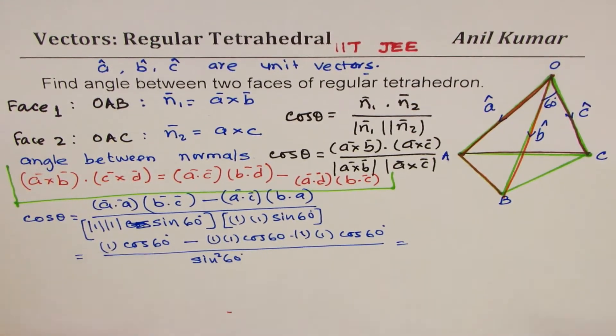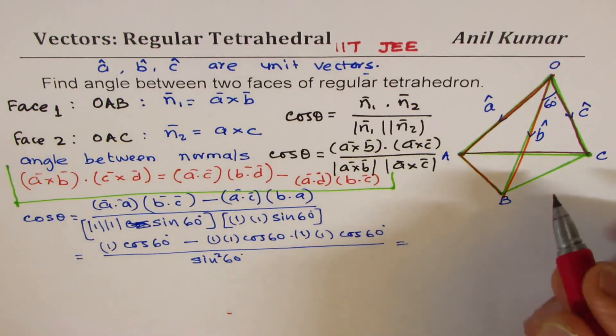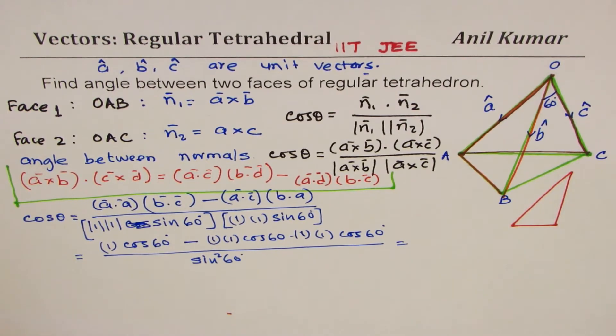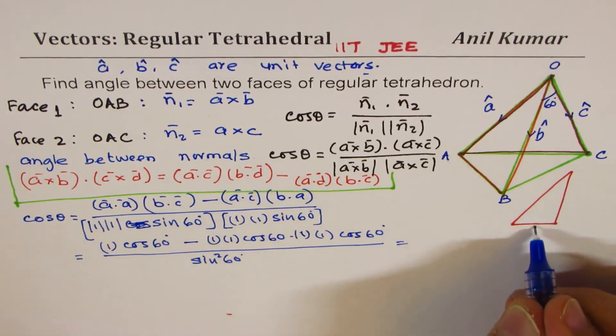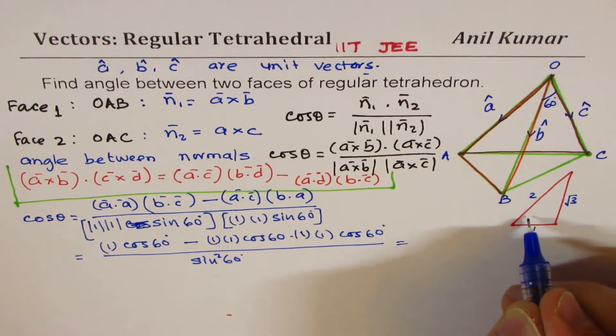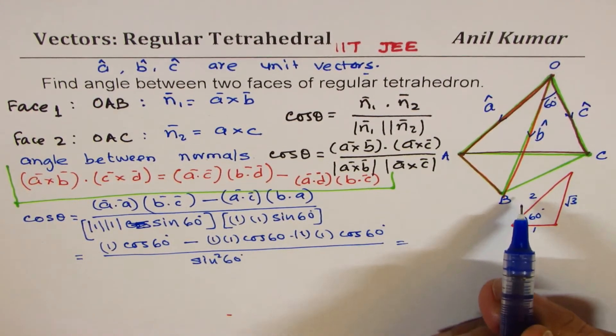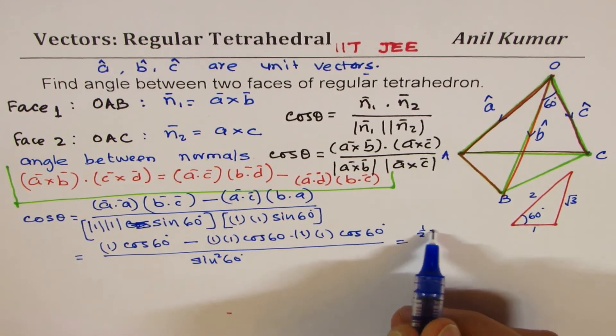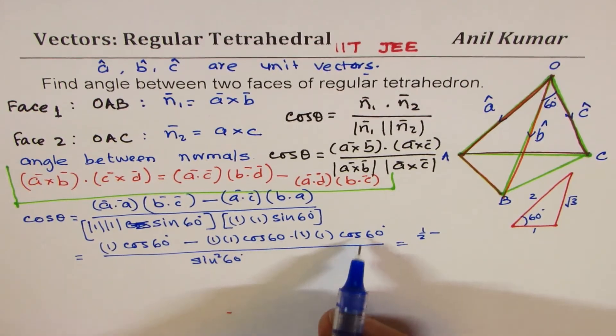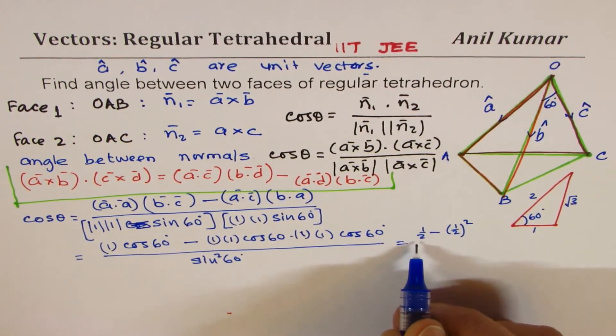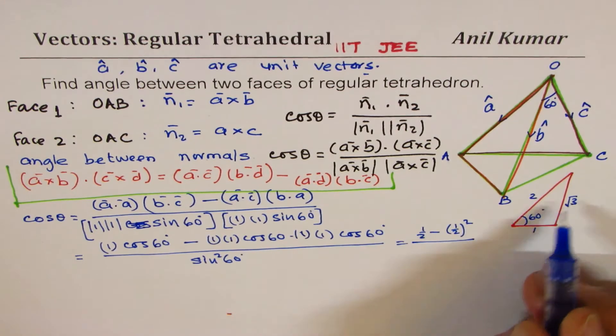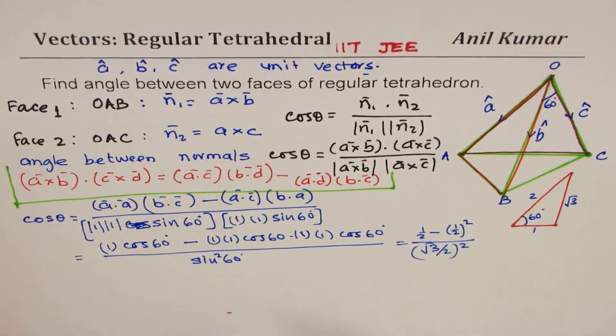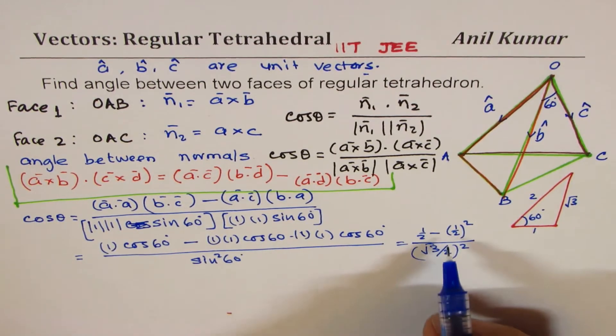Now cos 60 degrees is half. You can make your special triangle with sides 1, 2, and √3 for 60 degrees. So cos is 1/2. So it is 1/2 minus (1/2)² divided by (√3/2)². So cos θ equals 1/2 minus 1/4 divided by 3/4.